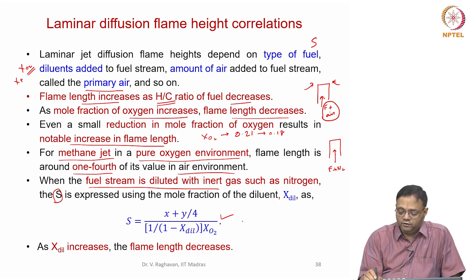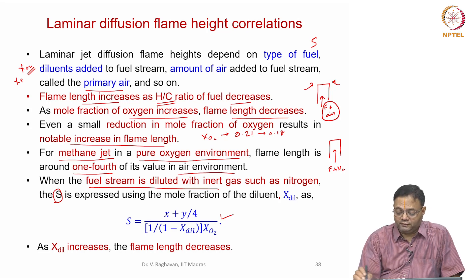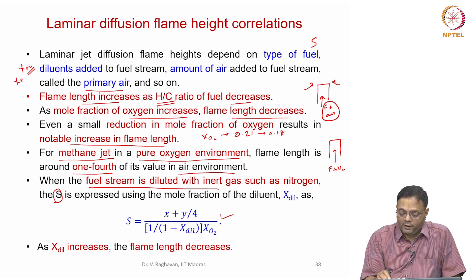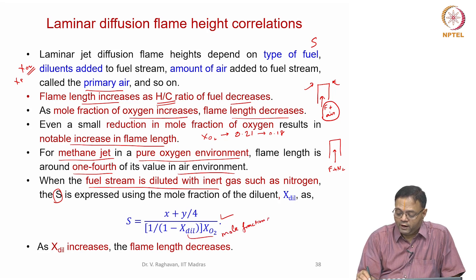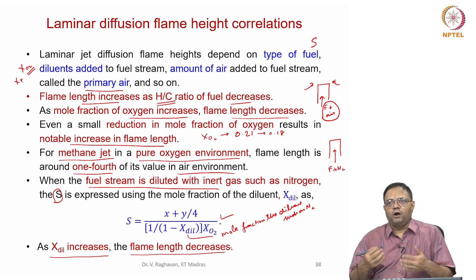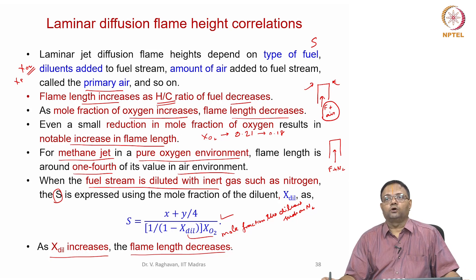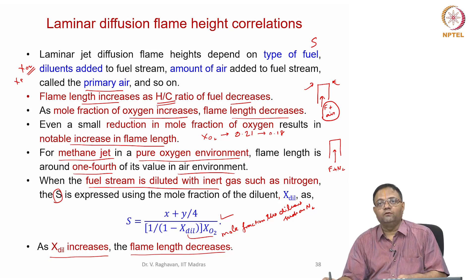When only pure fuel is fed, S = (X + Y/4) / XO₂. When a diluent is also present in the fuel stream, the denominator must include a factor of 1/(1 − X_diluent), where X_diluent is the mole fraction of the diluent such as N₂. Adding more and more nitrogen decreases the flame length because only less fuel needs to be burned. Roper's correlation accounts for all these effects to predict flame height for several fuels under several conditions.